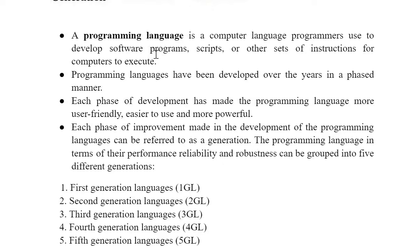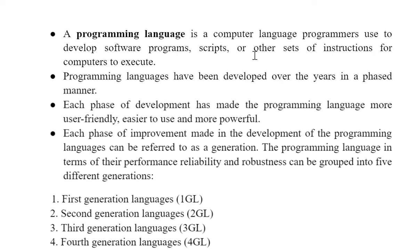Going to the definition part: a programming language is a computer language that programmers use to develop software programs — a script or other sets of instructions for a computer to execute. All computers understand a particular programming language, but we need to convert high level language into low level language. Programming languages have been developed over years in a phased manner.